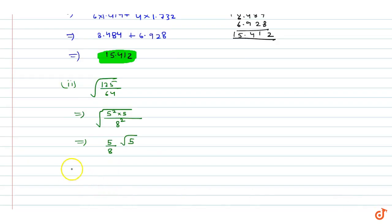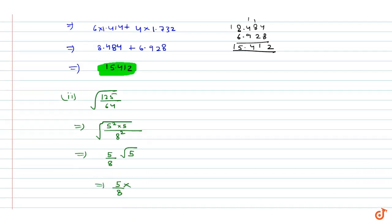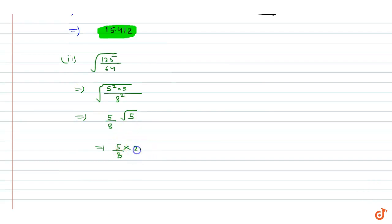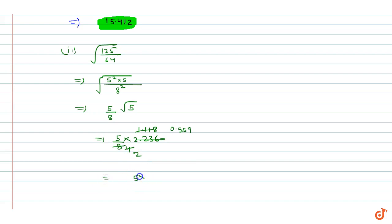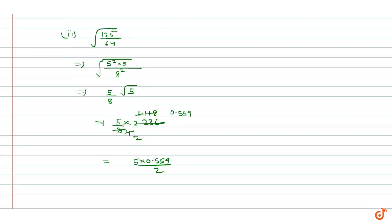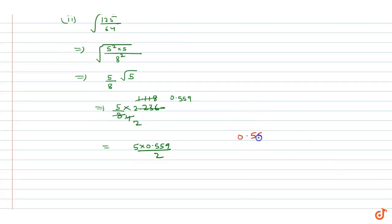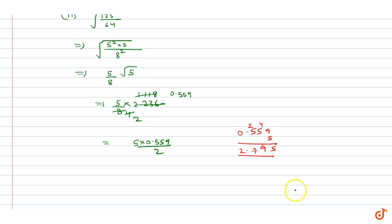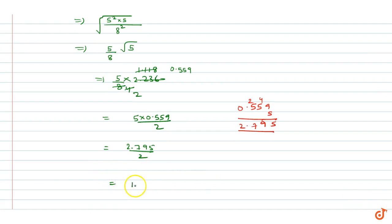This becomes 5 by 8 into under root 5. The value of under root 5 is 2.236. Dividing 2.236 by 2 gives 1.118, and dividing again by 2 gives 0.559. So we need to find 5 into 0.559 upon 2: 5 times 0.559 equals 2.795. Dividing 2.795 by 2 gives us 1.3975. This is our solution.